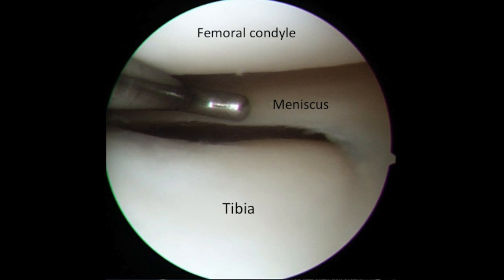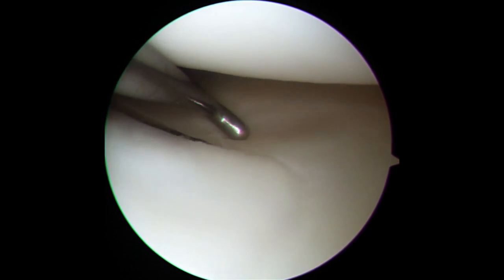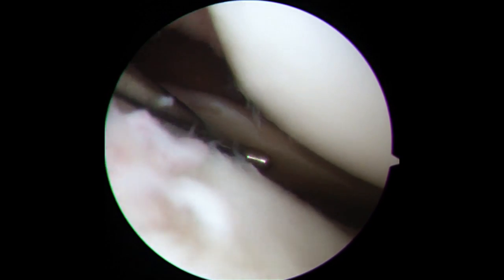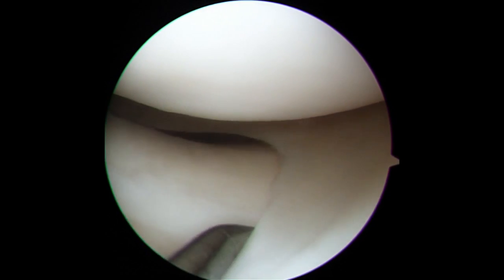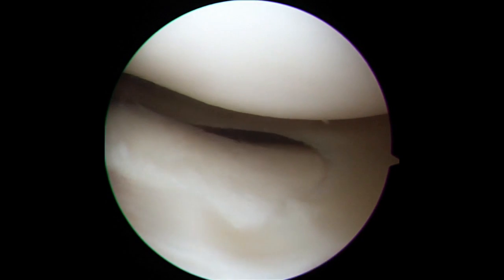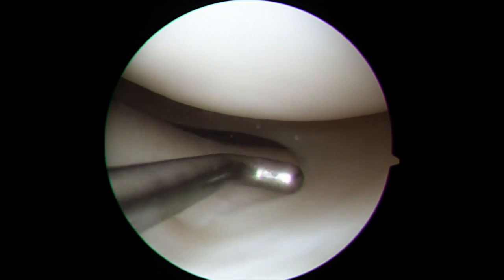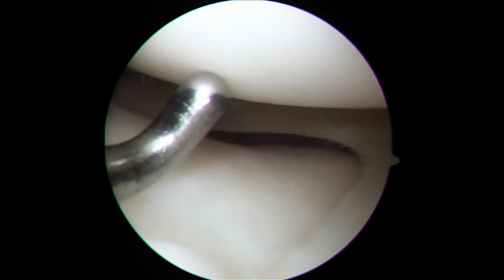Here again we see the anatomy inside the knee, then move into the arthroscopic view of this knee. My probe is on the meniscus — this is the lateral meniscus, and you can see it's a very normal looking meniscus. Above us is the femoral condyle, below us is the tibia. Here you can see pulling on the meniscus — this is more the anterior front portion, what we call the anterior horn. And then as we start working our way back posteriorly, toward the back of the knee.